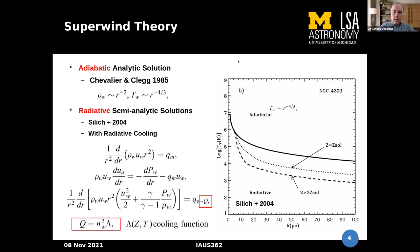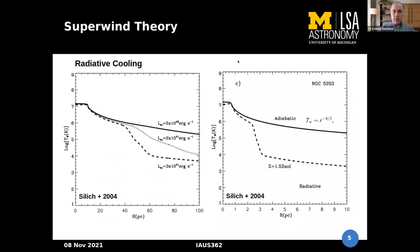However, several observations show suppressed superwind strong cooling which cannot be explained by adiabatic assumptions. There is a semi-analytic model by Silich in 2004 that incorporates radiative cooling functions, showing departure from the adiabatic solution. The cooling depends on ionization and metallicity, and in our work we also find dependence on mass loading rate and wind velocities.